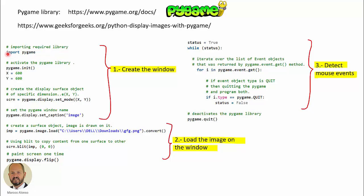The first step is to create the window. We import the library, initialize it, and with two variables define the dimensions of the window on which we are going to load the image. We create the window with the dimensions and assign it a name. We load the image and copy its content onto the window at coordinates 0,0. Then we paint the screen so the image is visible.